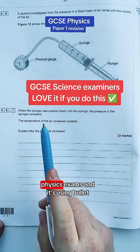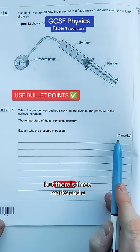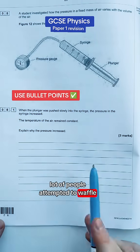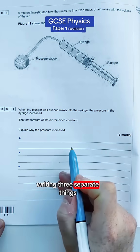This tip will really help you in GCSE physics exams, and it's using bullet points. There's no calculations in this question, but there's three marks, and a lot of people are tempted to waffle and write loads. You don't need to. You keep it concise, you get your three marks by writing three separate things.